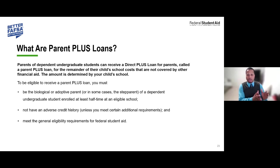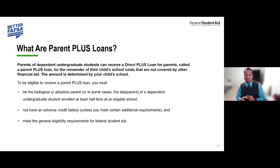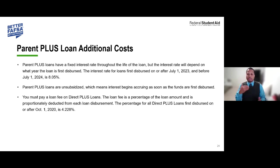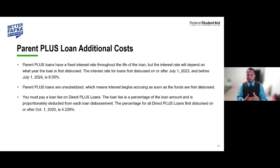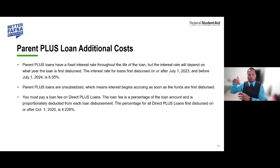You cannot have adverse financial credit history unless you meet additional requirements, and you must meet the general eligibility requirements for federal financial aid. Keep in mind this loan is taken out by the parent on behalf of the student, and the parent is responsible for repayment. The Parent PLUS loan will be in the parent's name. The interest rate for loans disbursed between July 1, 2023 and June 30, 2024 is 8.05%. They are unsubsidized, meaning interest begins accruing upon disbursement.